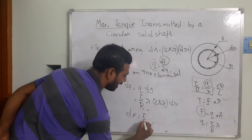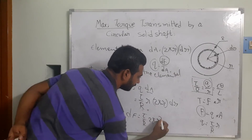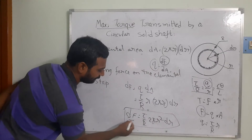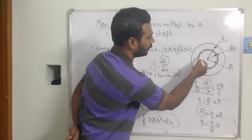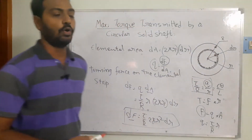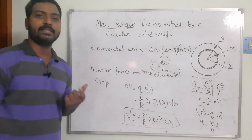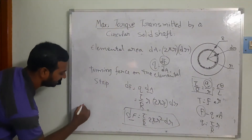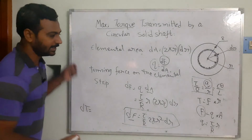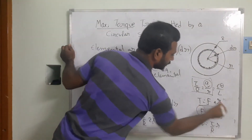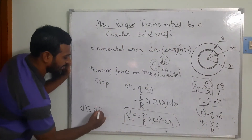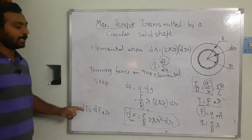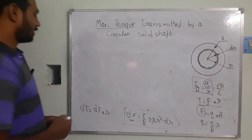So df equals (τ/R)·2πr²·dr. This df is the turning force on the elemental strip. Now to find the torque on this elemental strip, we write dT equals force times radius, so dT equals df times r.